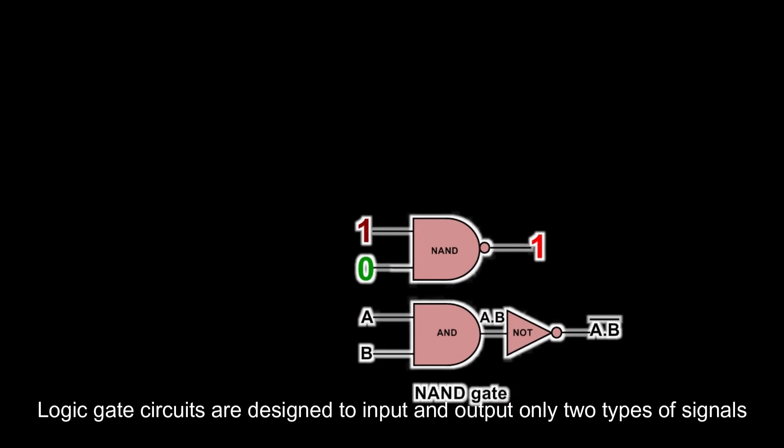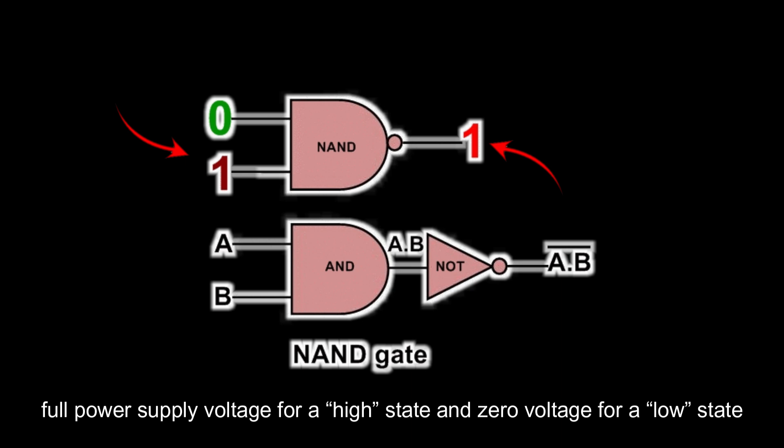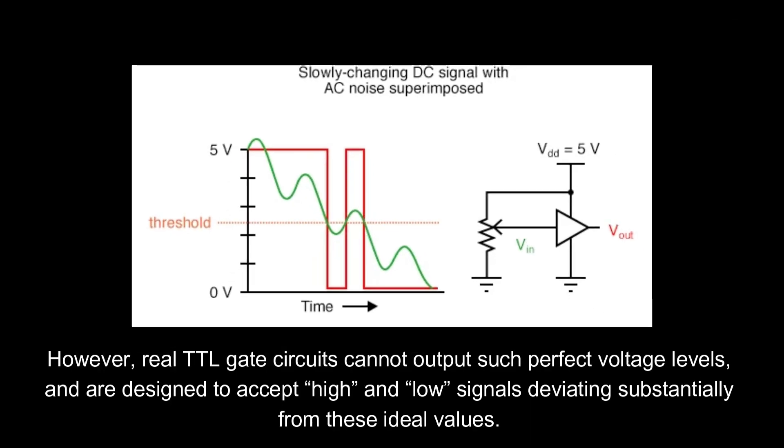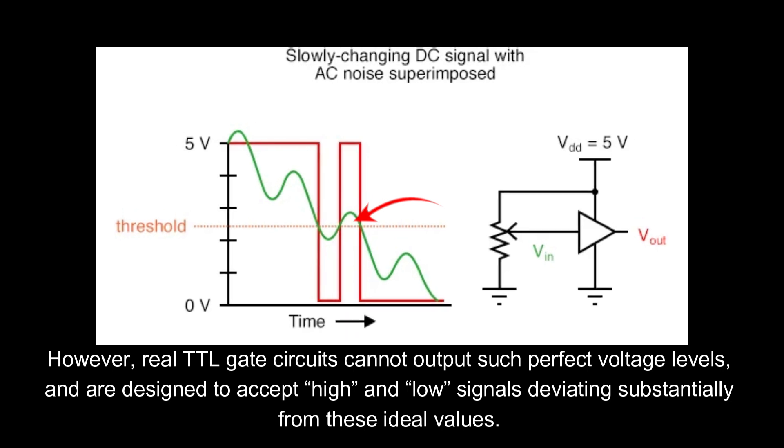Logic gate circuits are designed to input and output only two types of signals: full power supply voltage for a high state and zero voltage for a low state. I am taking an example of NOT gate here. TTL gates operate on a nominal power supply voltage of 5 volts. Ideally, a TTL high signal would be 5.00 volts exactly, and a TTL low signal 0.00 volts exactly. However, real TTL gate circuits cannot output such perfect voltage levels and are designed to accept high and low signals deviating substantially from these ideal values.